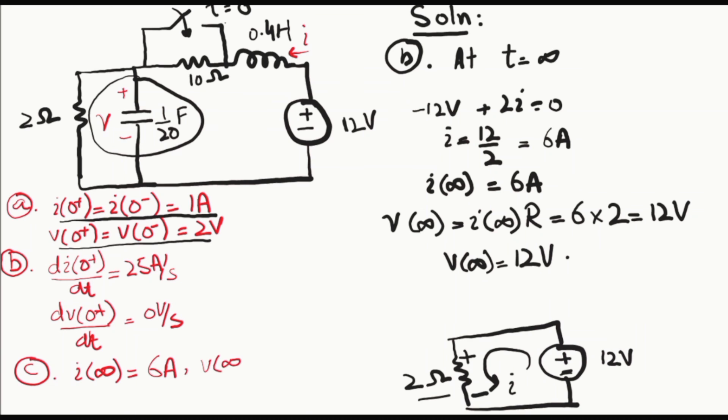So those are our findings: the final values of voltage and current are 12 volts and 6 amperes respectively.